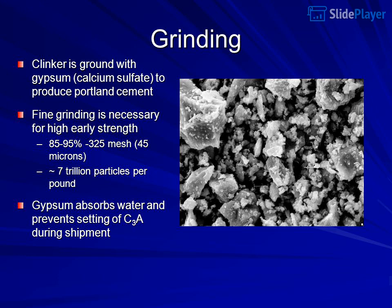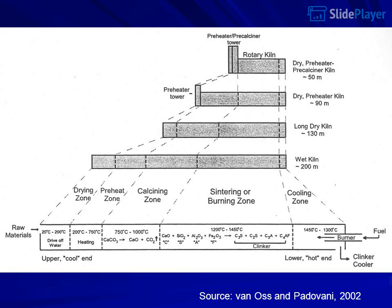Grinding: Clinker is ground with gypsum (calcium sulfate) to produce Portland cement. Fine grinding is necessary for high early strength — 85 to 95 percent minus 325 mesh (45 microns), approximately 7 trillion particles per pound. Gypsum absorbs water and prevents setting of C3A during shipment. Source: Van Os and Padovani 2002.